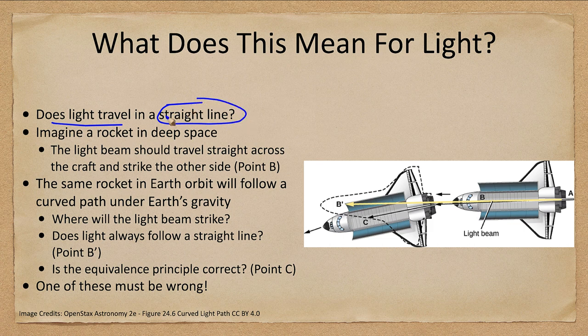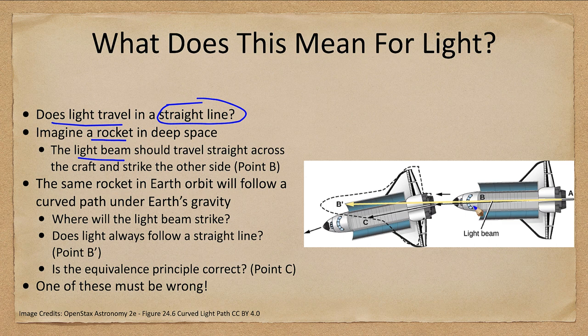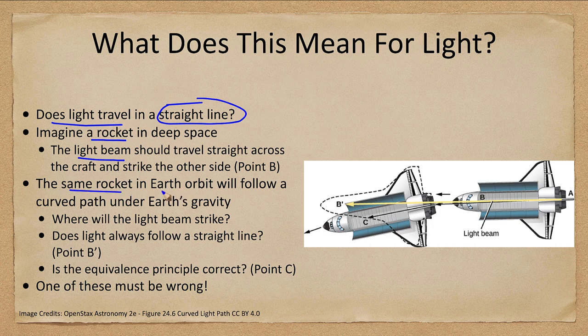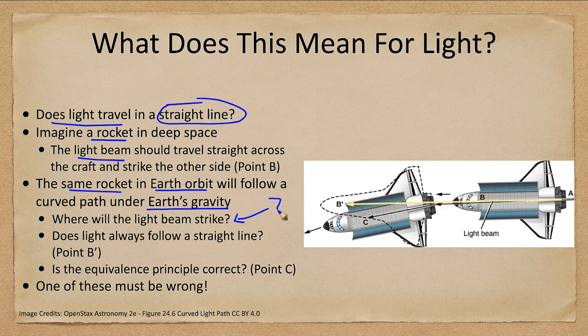What does it mean for light? Well, what we want to look at: does light travel in a straight line? We would think that it does, but let's look at a thought experiment here. We have this rocket in deep space, so the light beam will travel straight across and strike point B directly across on the other side of the craft. Now the same rocket, exactly the same rocket in Earth orbit, is being accelerated and it's following a curved path under Earth's gravity. Where does the light beam strike?